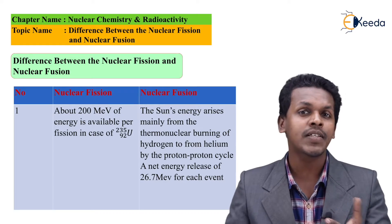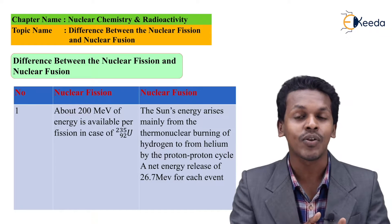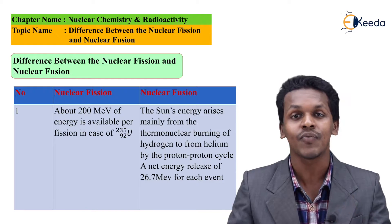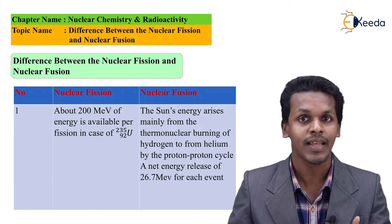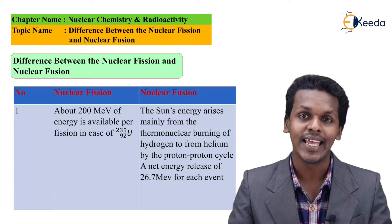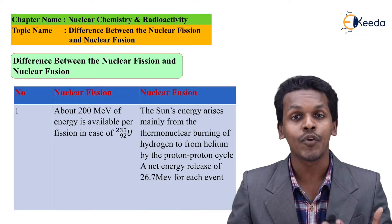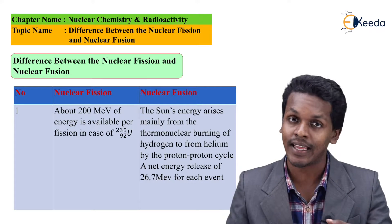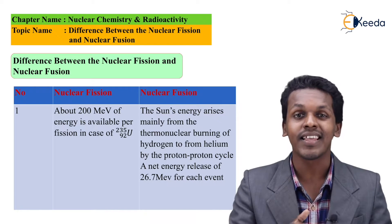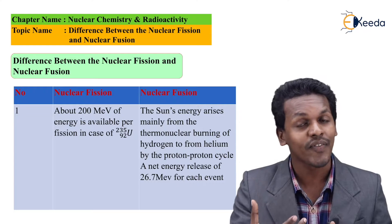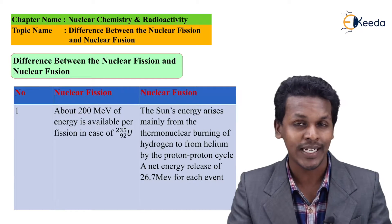For example, if we discuss about nuclear fission, we will get to know that this process occurs when a heavy nucleus of an atom, especially Uranium-235, is being split into two lighter particles by evolution of other particles like neutrons. And the main thing is they produce a tremendous amount of energy. So that is the definition of nuclear fission.